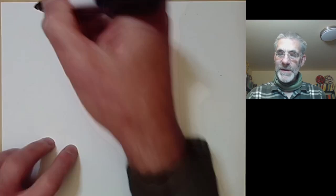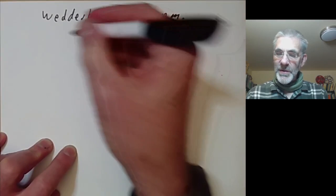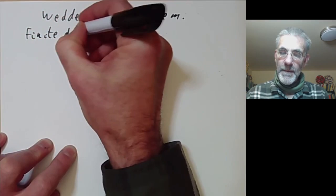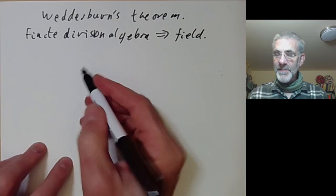So this lecture is part of an online Galois theory course and will be about Wedderburn's theorem, or at least one of Wedderburn's theorems because he proved several. The one that we're going to talk about is that a finite division algebra is a field, in other words it's commutative.